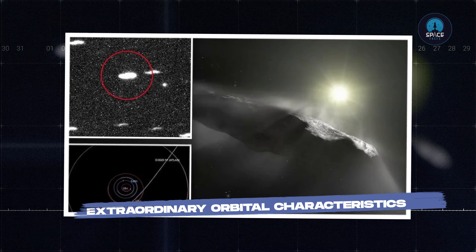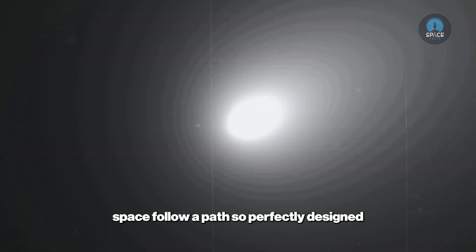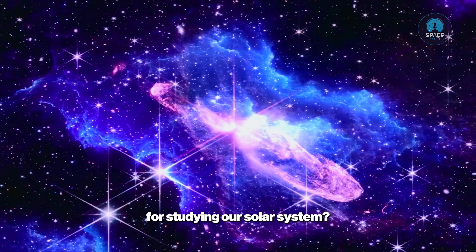Extraordinary Orbital Characteristics. How can an object from interstellar space follow a path so perfectly designed for studying our solar system?